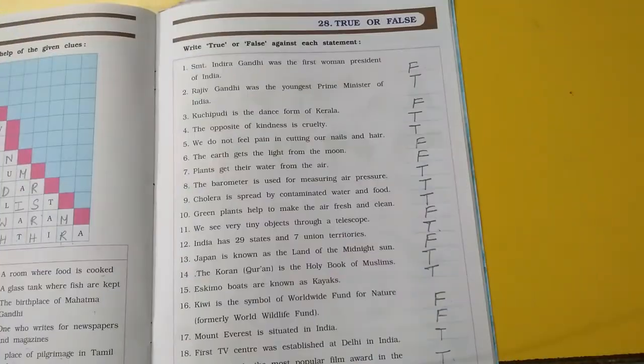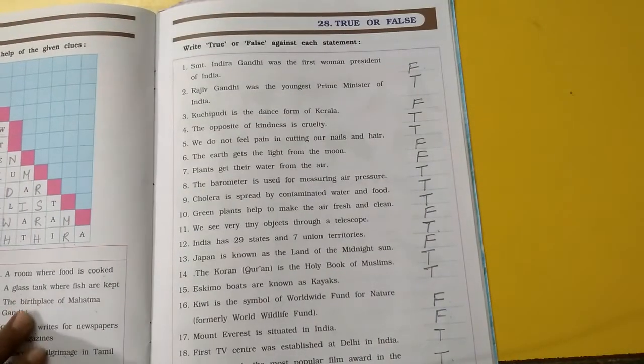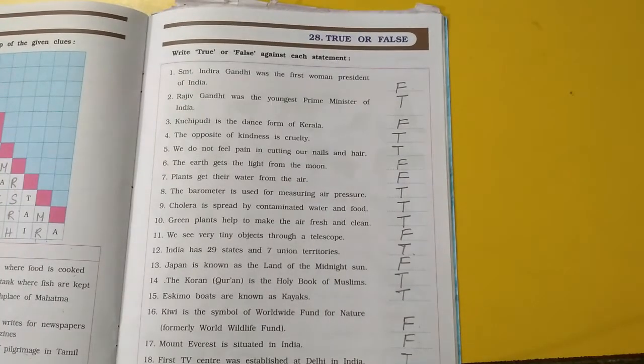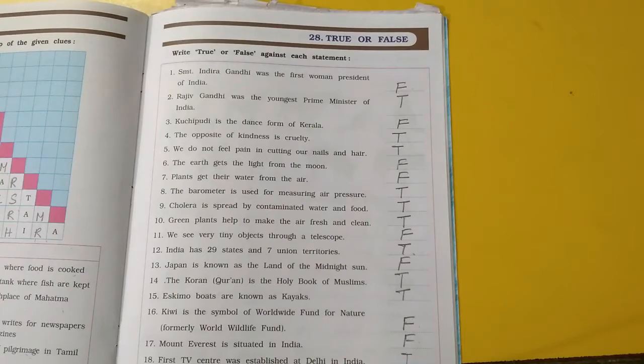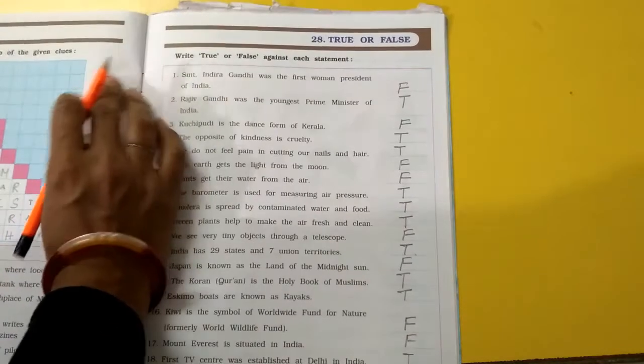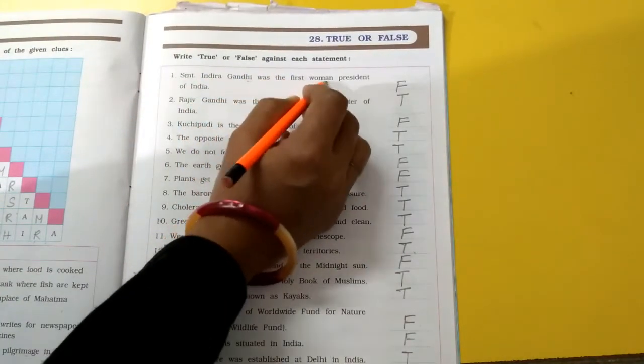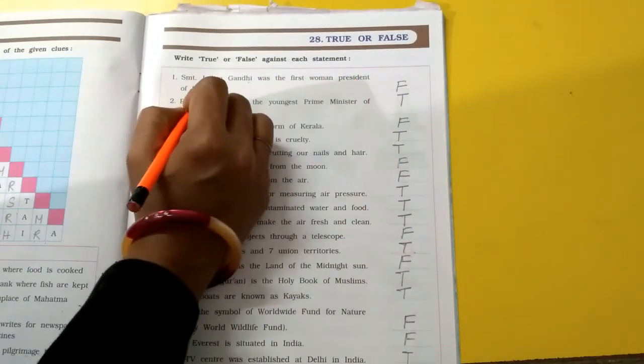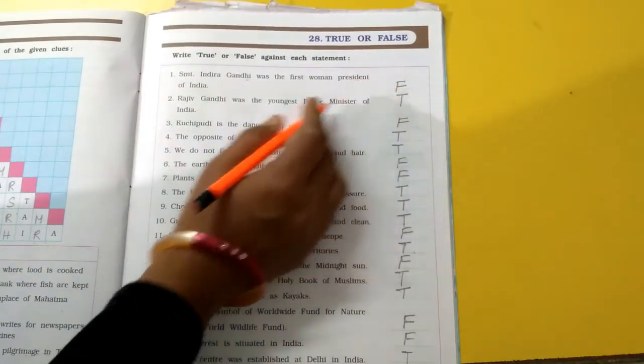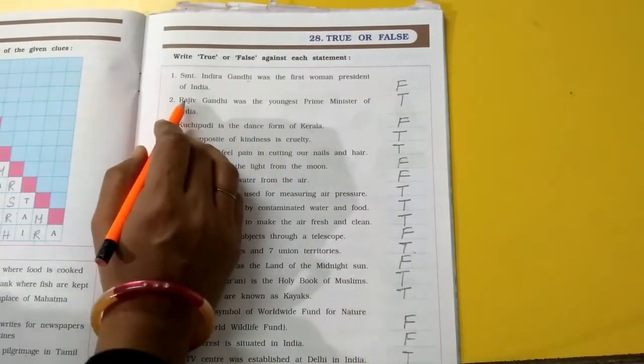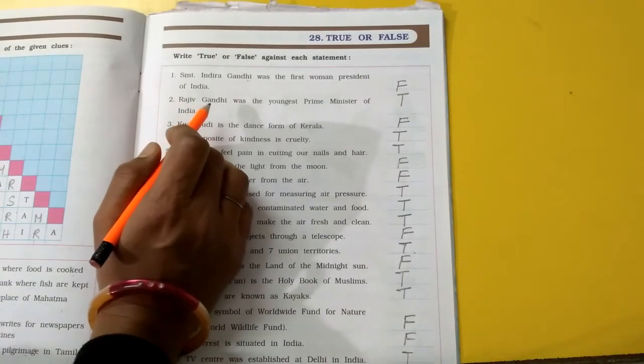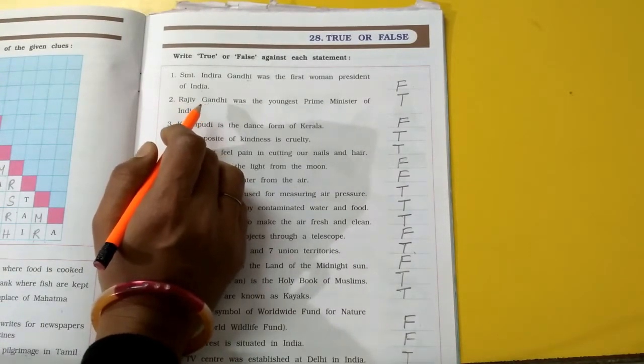Phir hum jaate hain chapter 28 ki taraf. Usmein aapko true and false likhne hain. Jo sahi sentence hai wahan pe true, galat hai wahan false. Shrimati Indira Gandhi was the first woman president of India. False. Wo president nahi thi, sabse pehli prime minister thi.